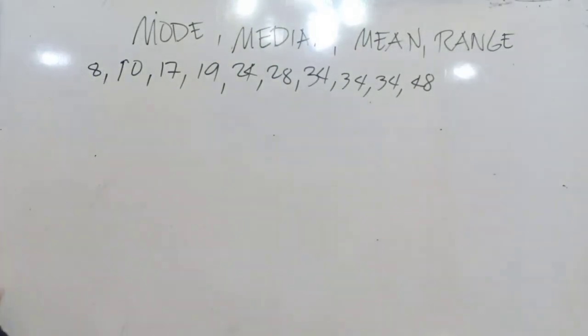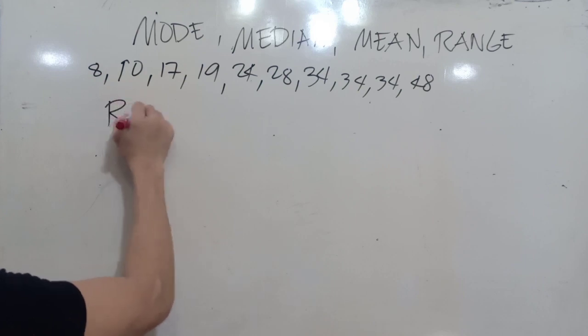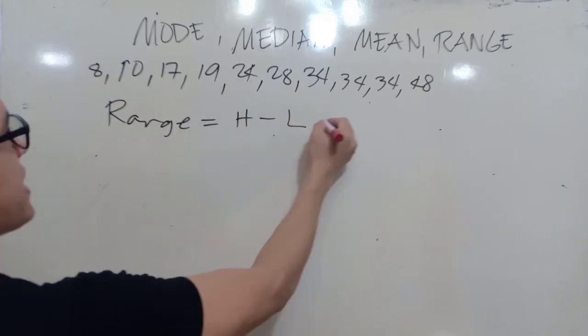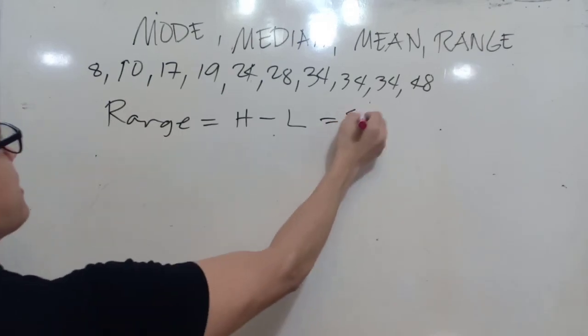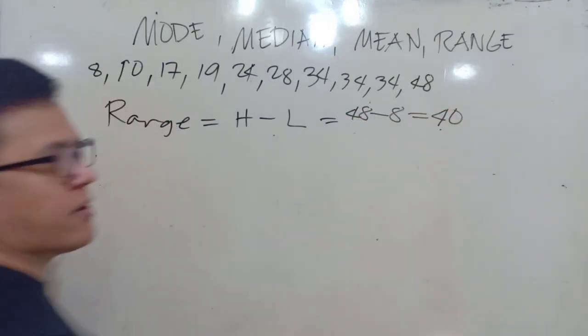We'll just have to get first the range. The range, our range is equal to the highest minus the lowest, which is 48 minus 8. And so our range is equal to 40.